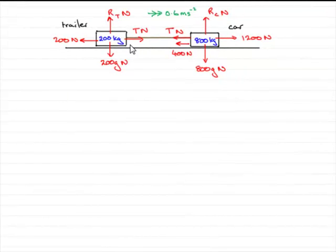Now in this part of the question, we've got to find the tension T in the tow bar. What I've done is I've updated the diagram with the acceleration we found in the first part of the question, 0.6 meters per second per second.